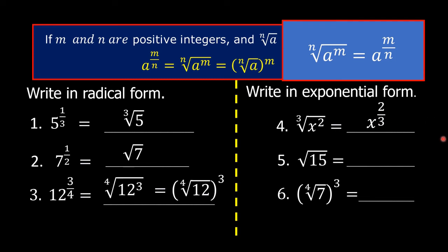Number 5: our answer is 15 raised to 1 over 2. It is understood the exponent of 15 is 1, and it is understood the index here is equal to 2.